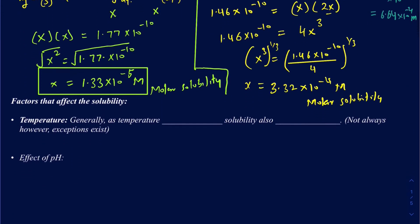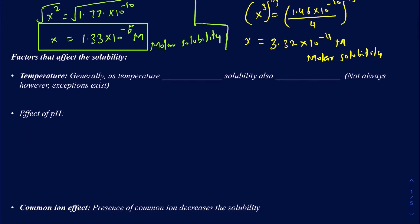Now let's talk about what really affects solubilities. We learned in earlier chapters that when you have a salt, increasing the temperature generally increases solubility. As temperature goes up, solubility also increases. That's mostly true — it's not always true because there are some exceptions, some salts whose solubility drops when you heat them. But for the most part, solids will increase in their solubility when temperature goes up.